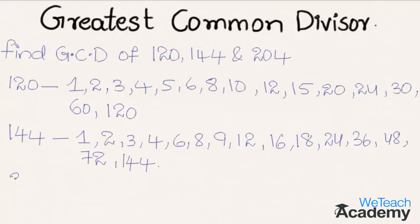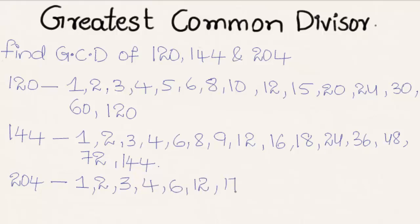Now let us consider the other number, 204. So 204 is divisible by 1, 2, 3, 4, 6, 12, 17, 34, 51, 68, 102, and 204 itself. These are all the factors of 204.